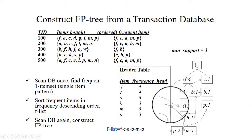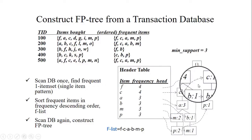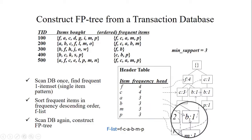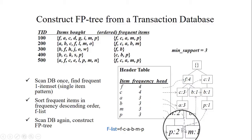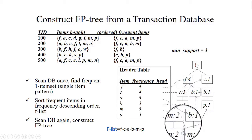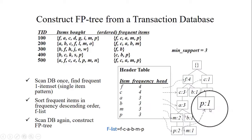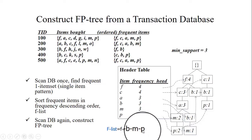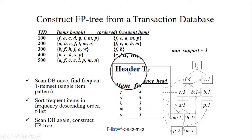From the tree, we generate the header table: F has count 4, C has 3+1=4, A has 3, B has 1+1+1=3, M has 2+1=3, P has 2+1=3. The frequent items in this set are F, C, A, B, M, and P.